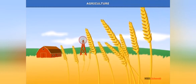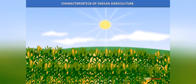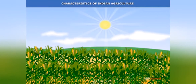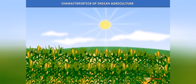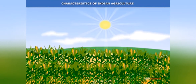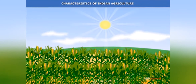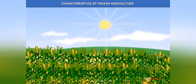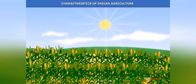Types of farming: Agriculture is an age-old economic activity in our country. Over the years, cultivation methods have changed significantly depending on the characteristics of the physical environment, technological know-how, and social and cultural practices. Farming varies from subsistence to commercial type in different parts of India, and the following farming systems are practiced.